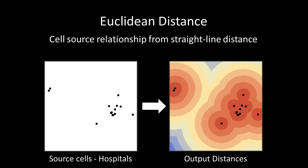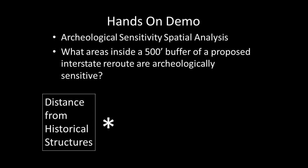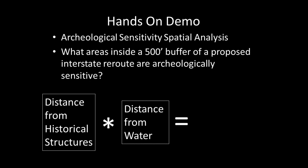In this hands-on demonstration, I'll give you an example of using vector-based geoprocessing tools for a hypothetical spatial analysis — specifically an archaeological sensitivity spatial analysis. The analysis will examine what areas inside a 500-foot buffer of a proposed interstate reroute are archaeologically sensitive, such as Native American or historical structures that should be accounted for before construction begins. We will use a simple model calculating distances from historical structures times distance from water to derive an archaeological sensitivity score.